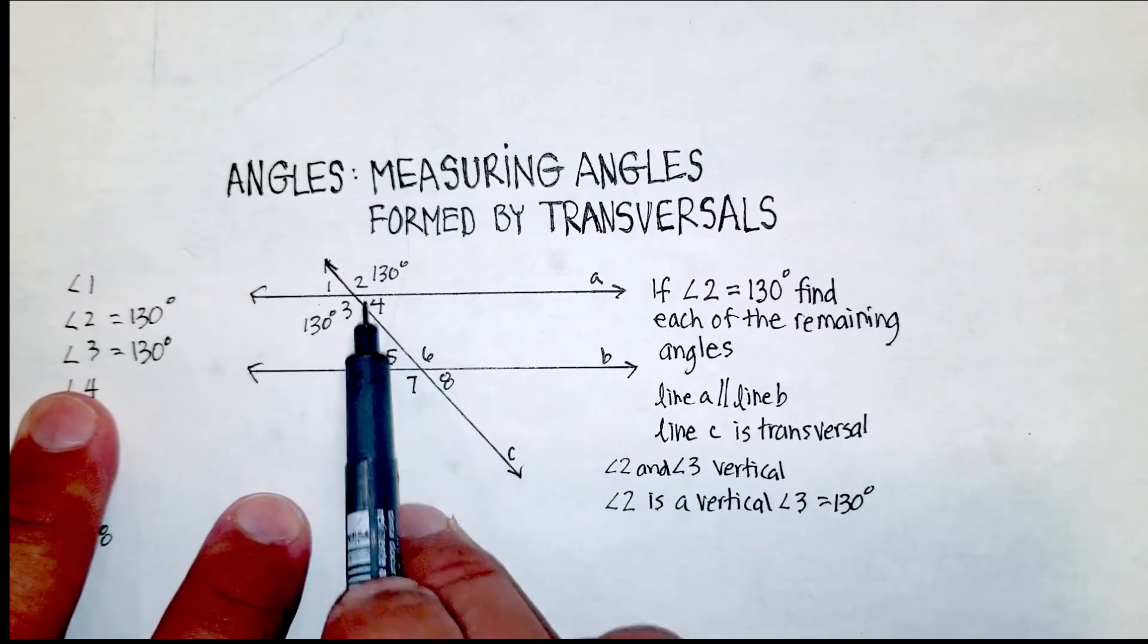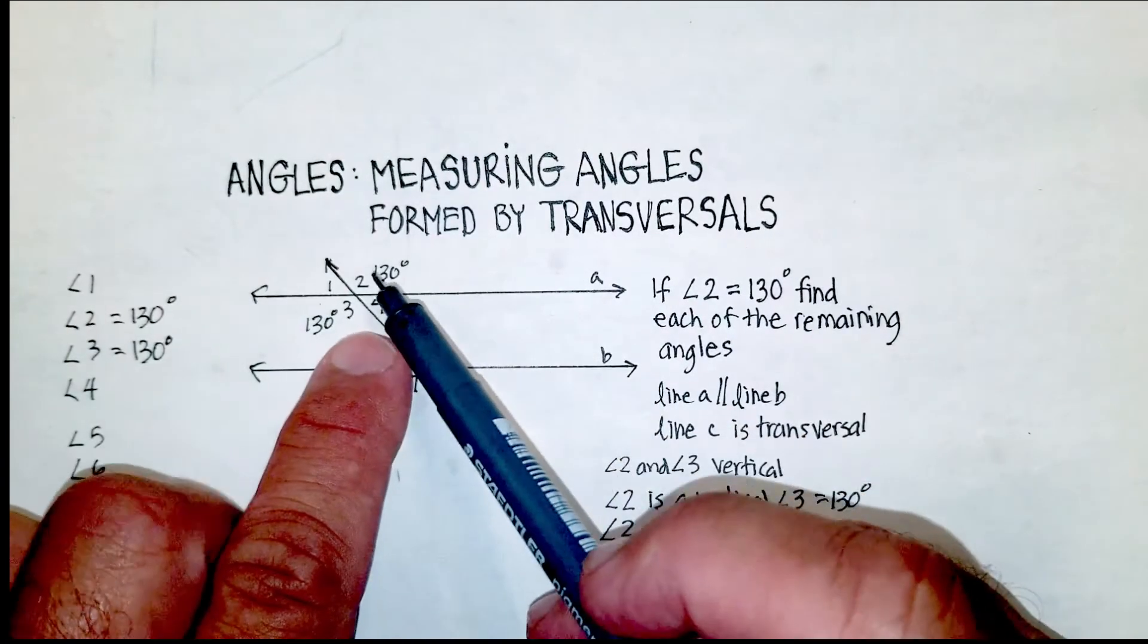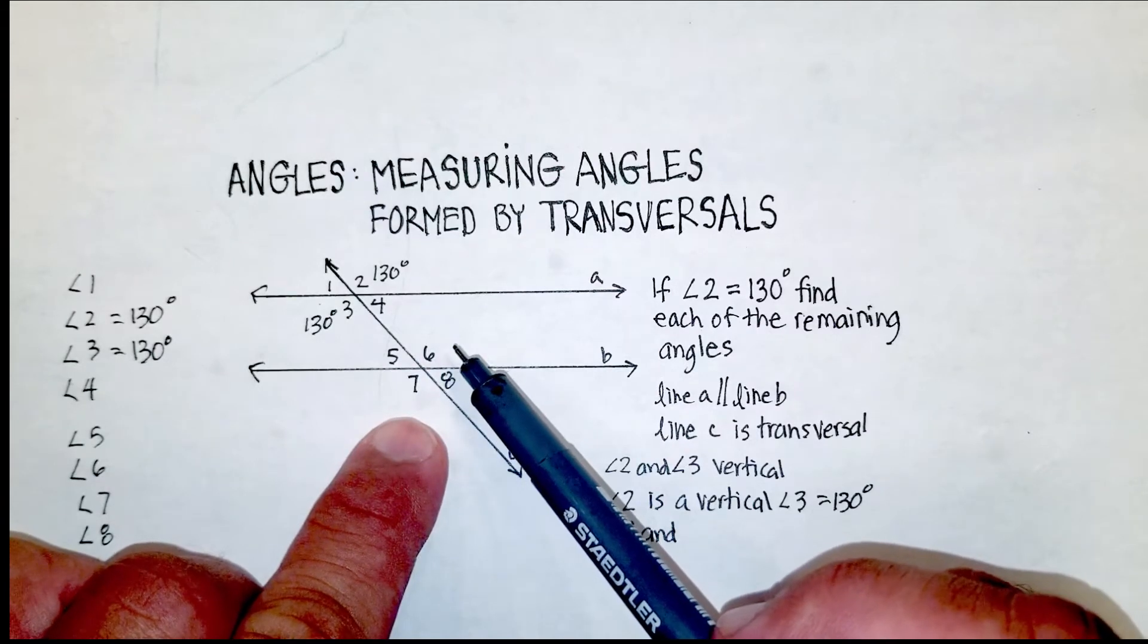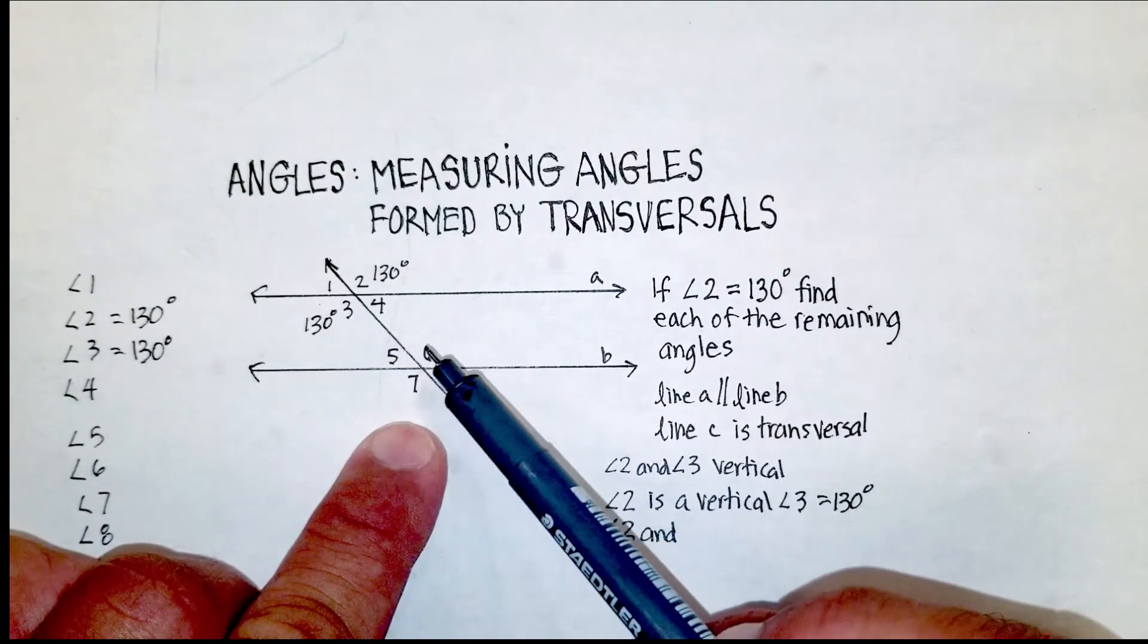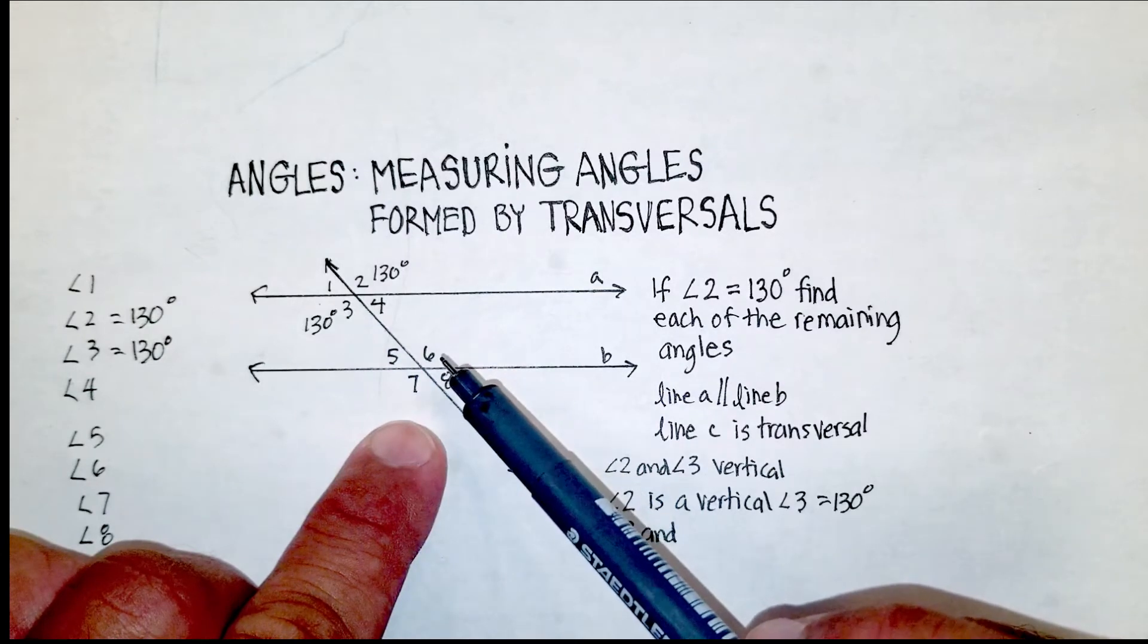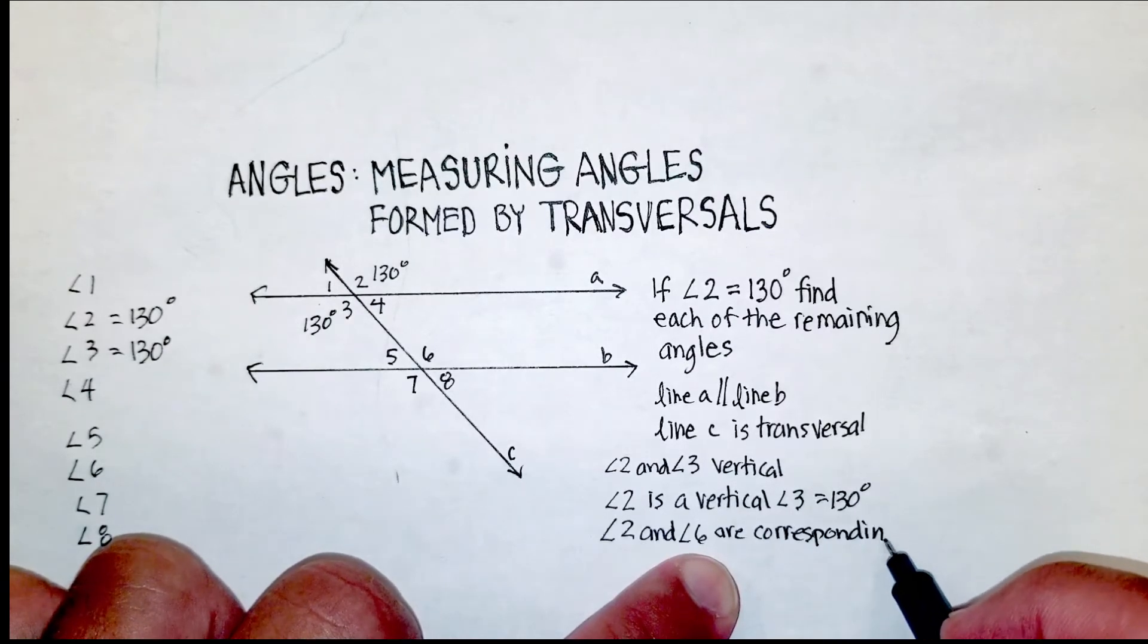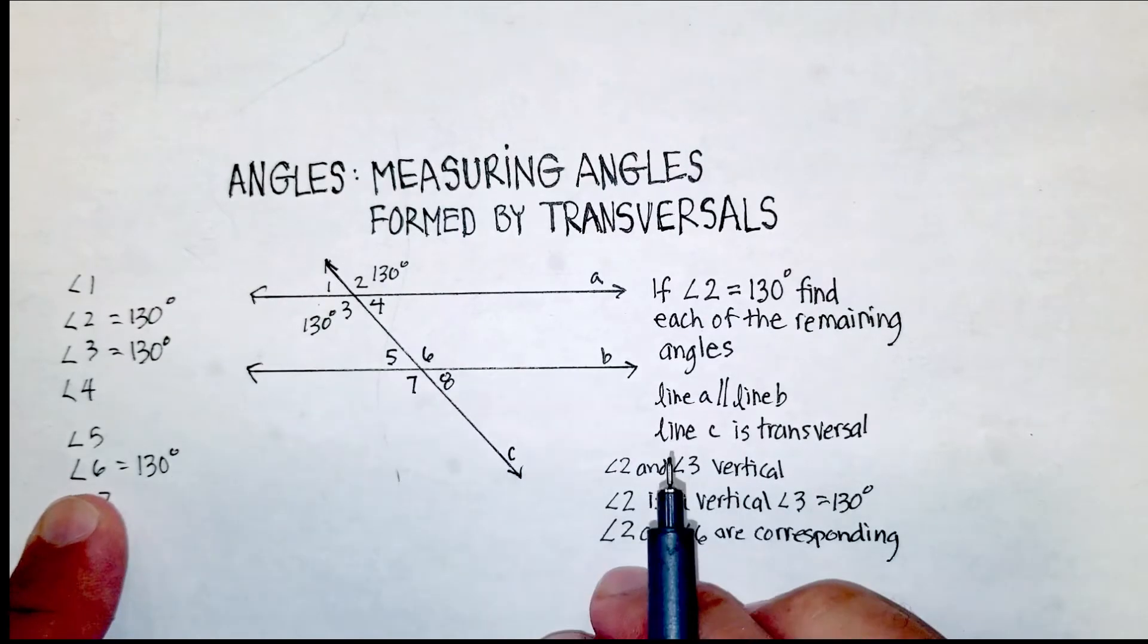Now, we also know that angle two and angle six are what they call corresponding angles, which means that they are in the same position. In the upper right-hand corner of this group of four, and angle six is in the upper right-hand corner of this group of four angles. And remember that a transversal creates two groupings of congruent angles. So when an angle is corresponding, that just means that they are also congruent. So angle two and angle six are corresponding, and corresponding angles are also congruent. So we have angle six as 130 degrees as well.